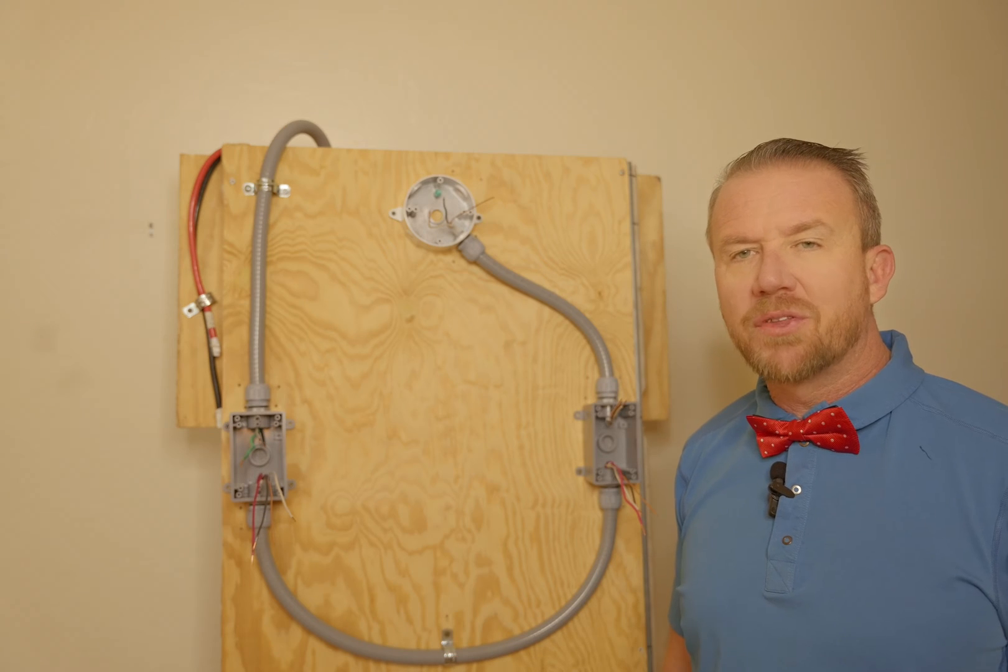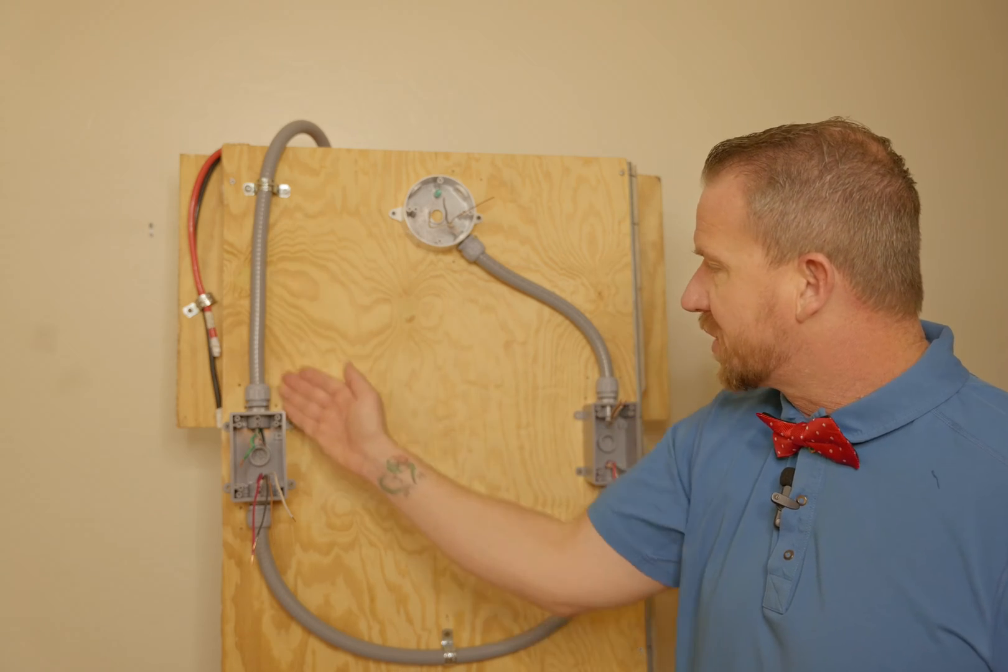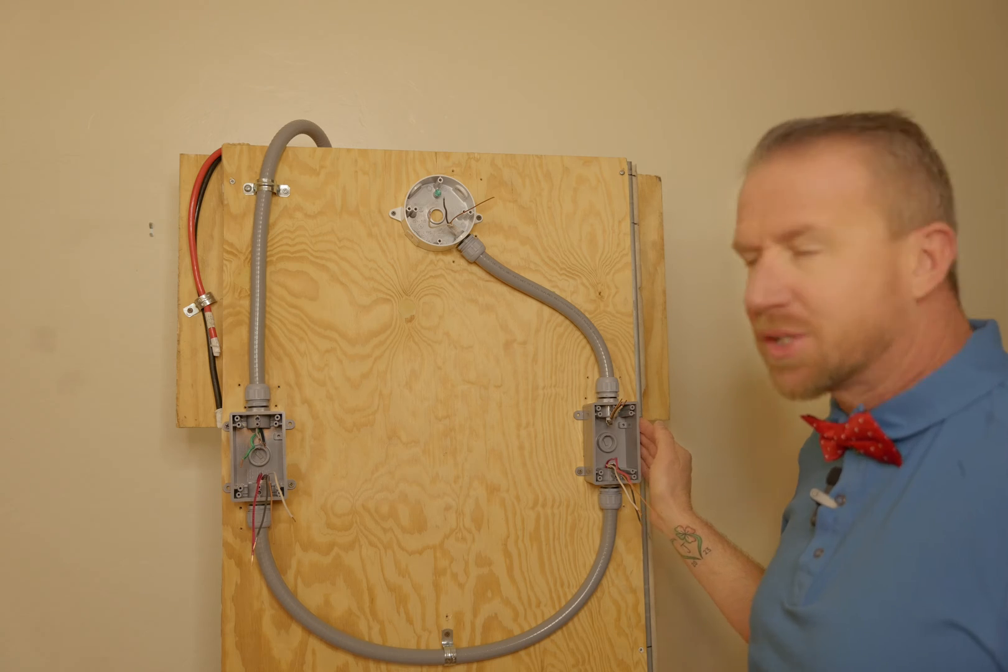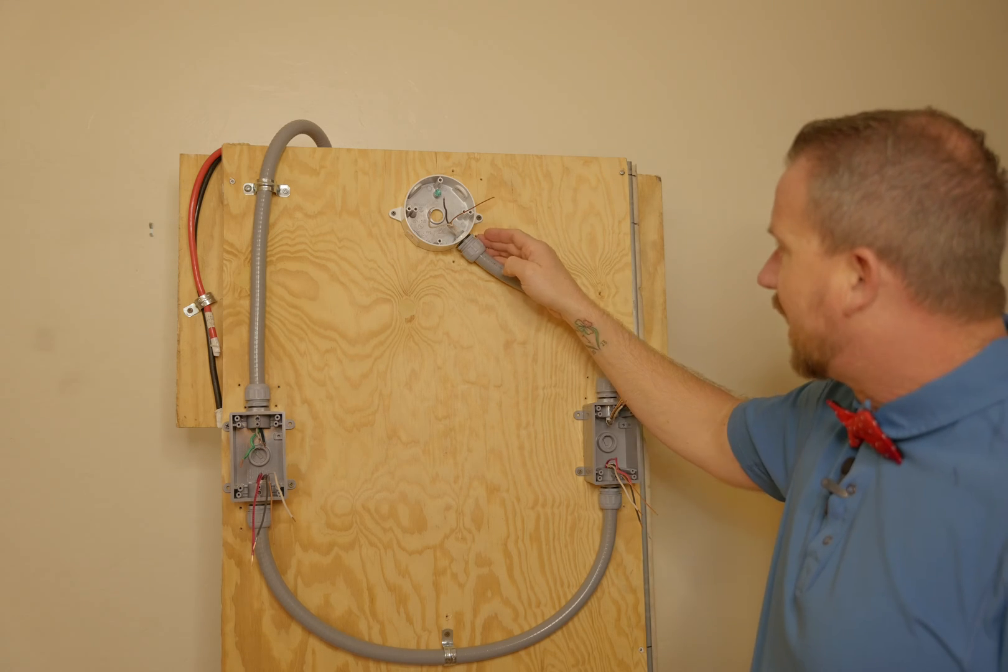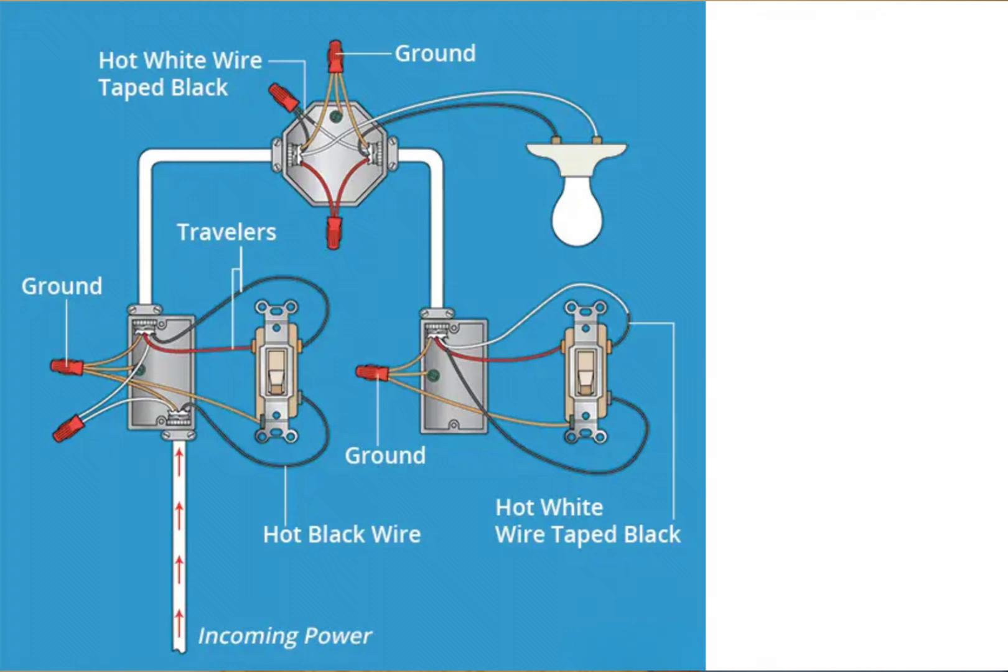Now there are a few different ways to wire in three-way switches. In today's example, I'm going to show you where power comes into the first switch, runs through to the second switch, and then up to the light. These next few slides will show you the other options on how to wire in a three-way switch. Feel free to pause it and study the diagrams if necessary.